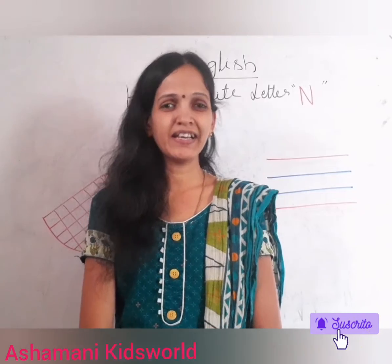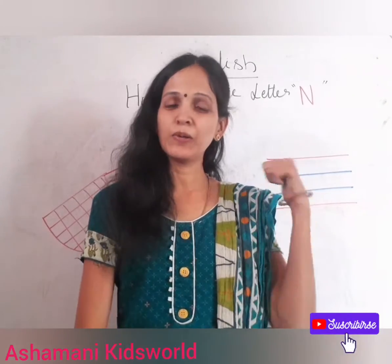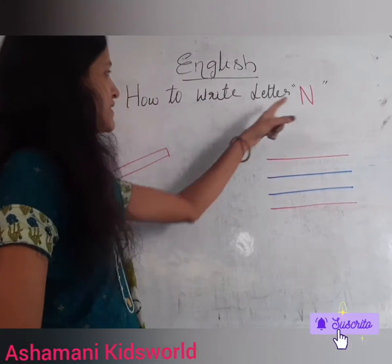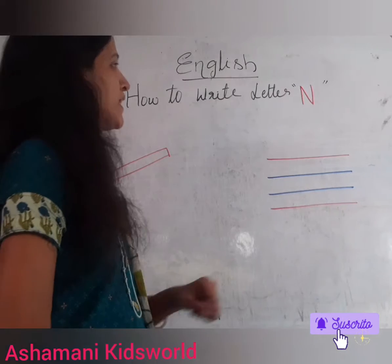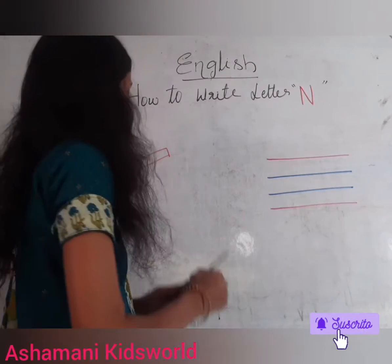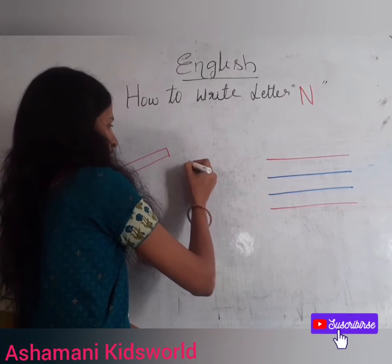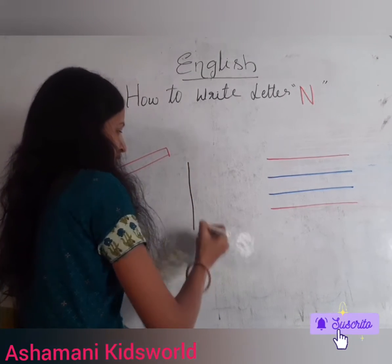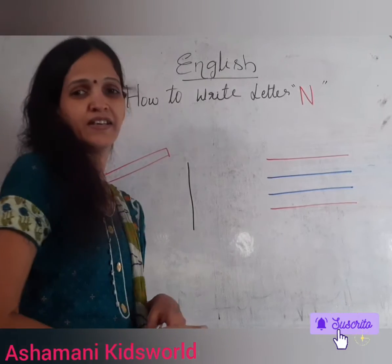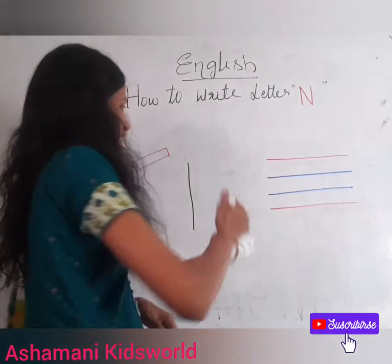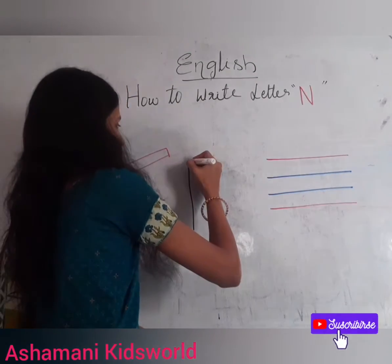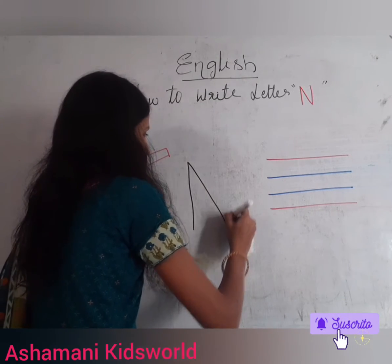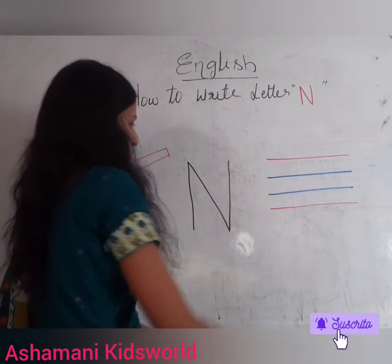Okay, all of you, look at the board. To write letter capital N, you have to write a standing line. Write a standing line and write a slanting line and go up.